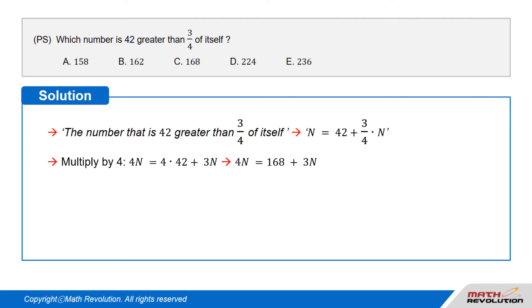We get 4N = 4 × 42 + 3N, or 4N = 168 + 3N, which can be rearranged to get 4N - 3N = 168.